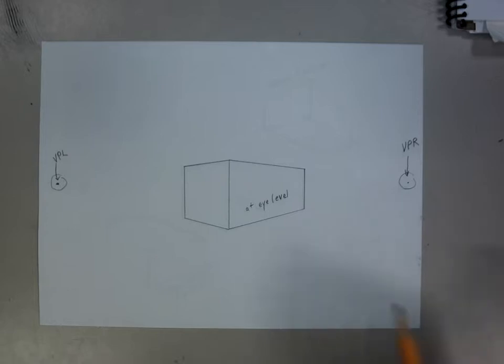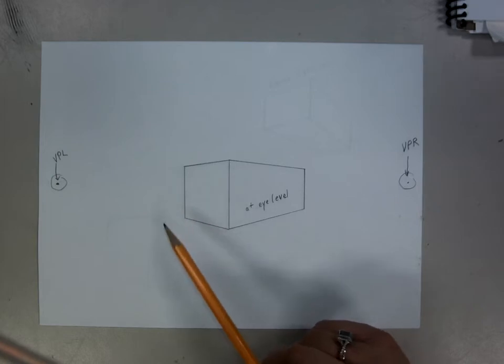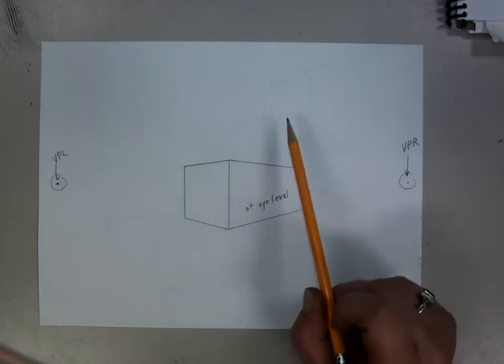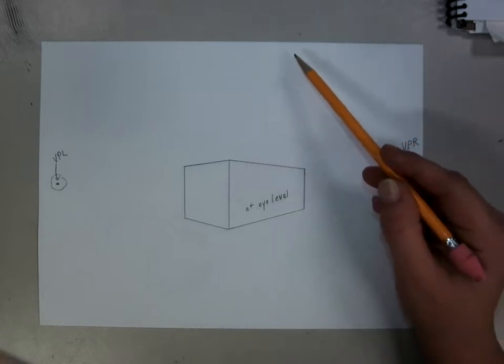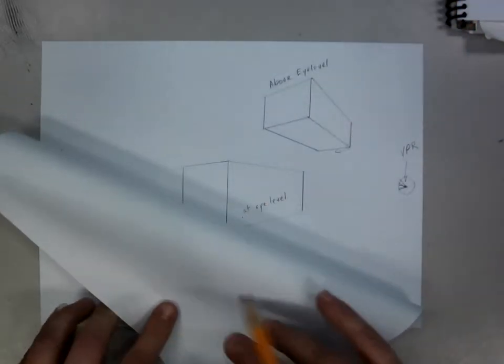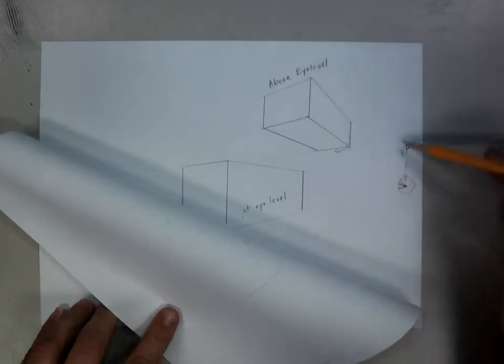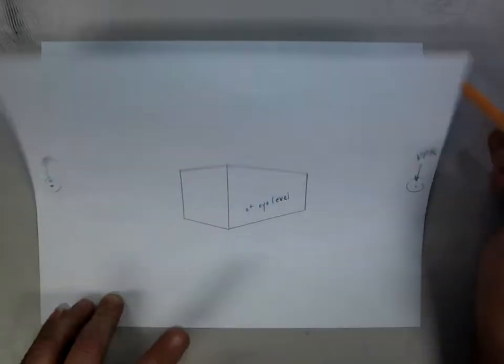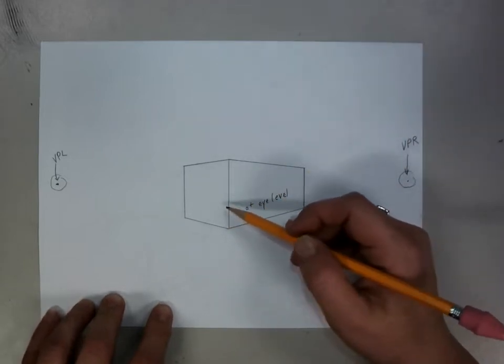This is at eye level. You can actually do these at below eye level or above eye level as well. The exact same procedures work. However, below eye level, you're going to see more roof. At above eye level, you may not see hardly any roof at all. You may only see the peak of the roof. So in order to make it simple and not all the extra stuff, we're going to do it at eye level.